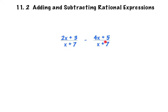Look at this first example — both have x plus 7 for their common denominator, so that works out great. You can just add the numerators together and leave the denominators the same. It's like taking 4/7 plus 1/7, which equals 5/7 — you add the numerators but leave the denominator the same. You have to have that common denominator for that to work.